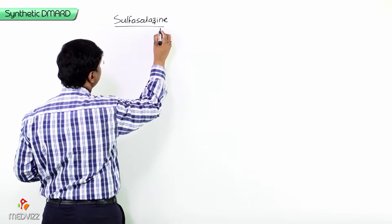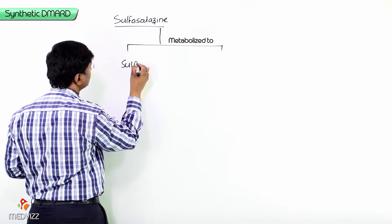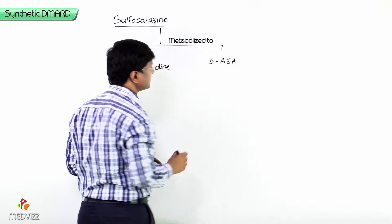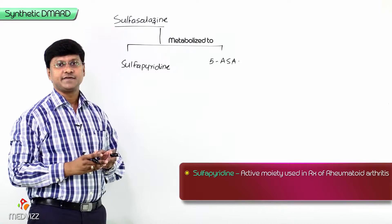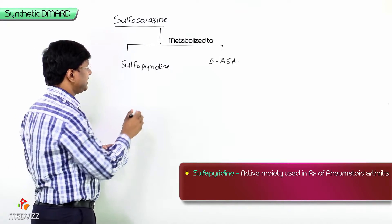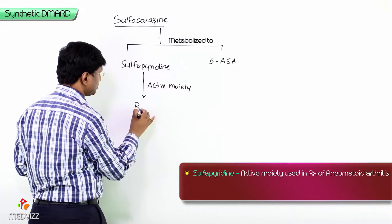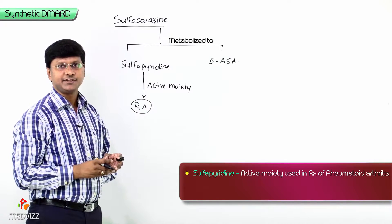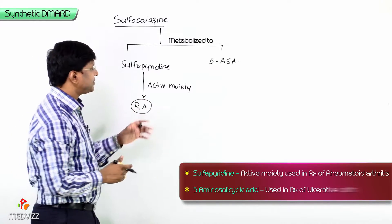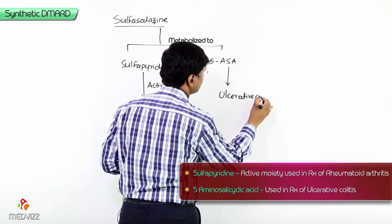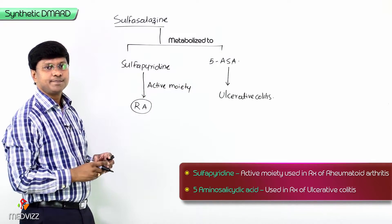Sulfasalazine is metabolized to sulfa pyridine and 5-aminosalicylic acid. Sulfa pyridine is the active moiety used in the treatment of rheumatoid arthritis, while 5-aminosalicylic acid is used in the treatment of ulcerative colitis.